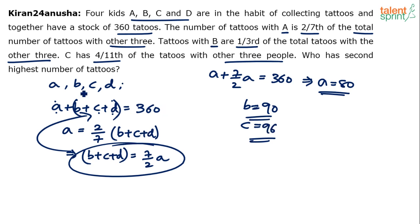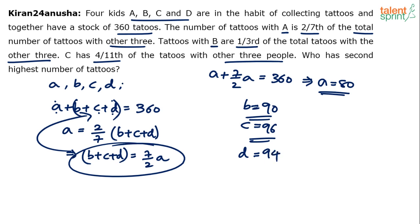I've got three values — now substitute back in the first equation to get the fourth value. A is equal to 80, B is equal to 90, C is equal to 96. Using the concept of average equal distribution: average is 90. B has got 90, C has got 6 more, A has got 10 less, so the balance of 4 goes to D. D should be 94. Check: 80 plus 90 is 170, plus 96 is 266, plus 94 gives you 360. So D is equal to 94.